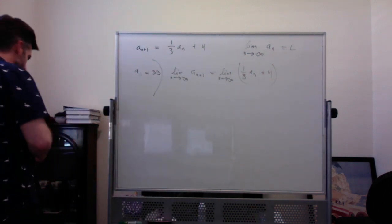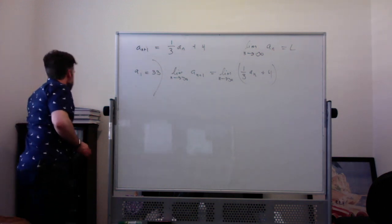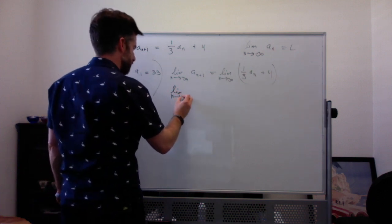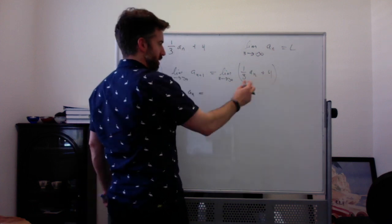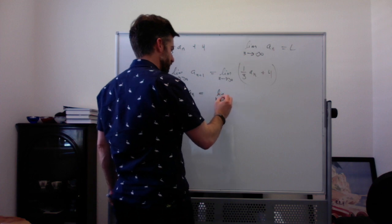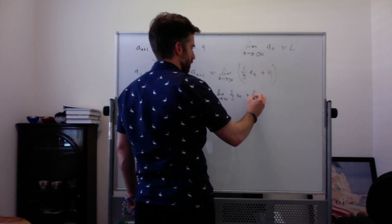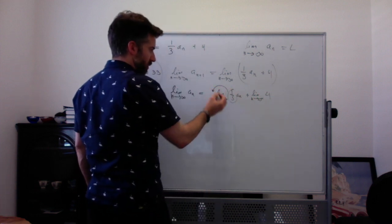But using our limit rules, we know that the left hand side is what it is, and the right hand side, the limit of two things added together, we can break apart. This is the limit as n goes to infinity of 1 third times A sub n plus the limit as n goes to infinity of 4. We know that the 1 third here, a constant multiple, can come out in front.